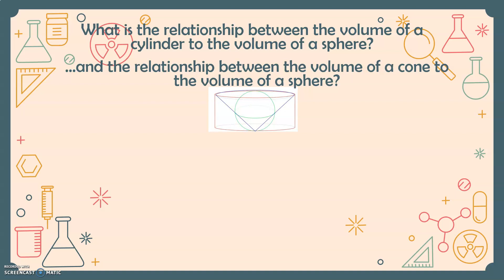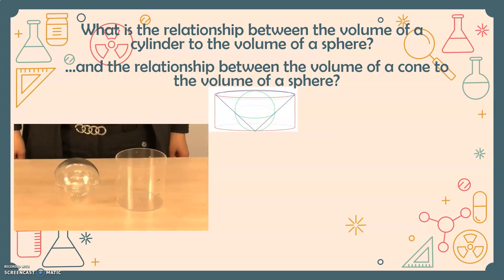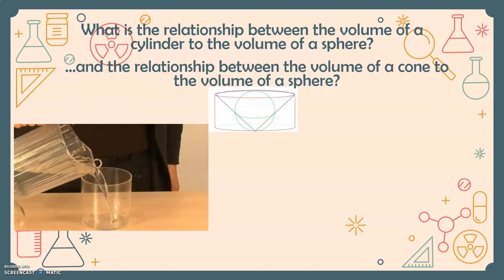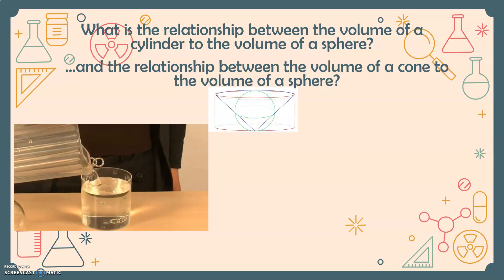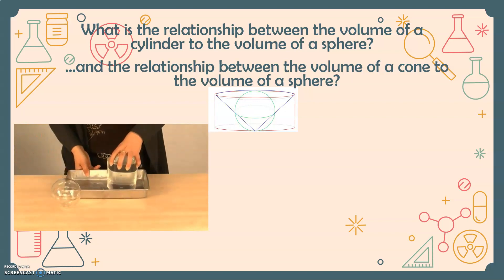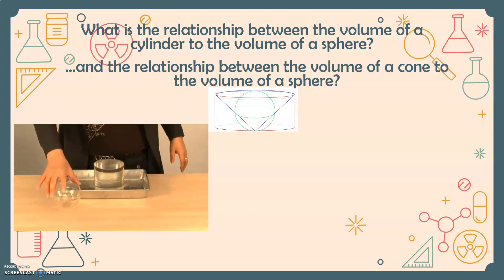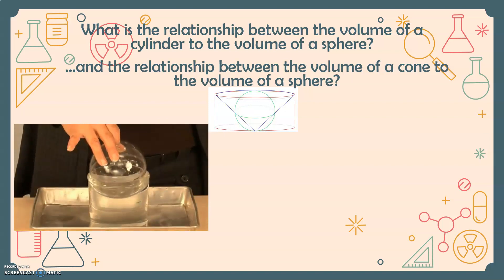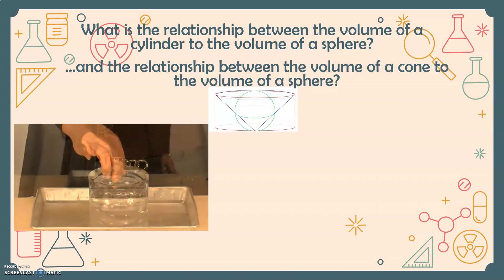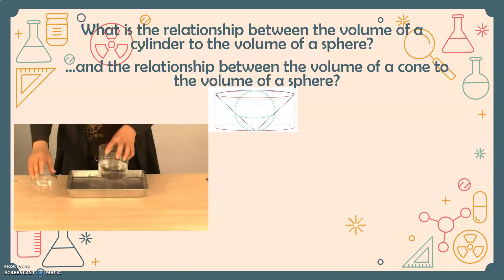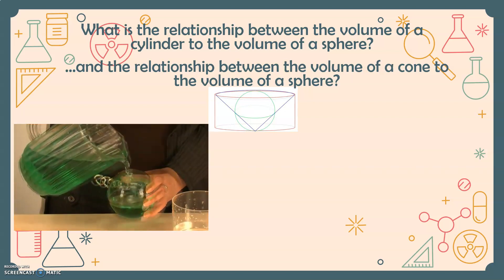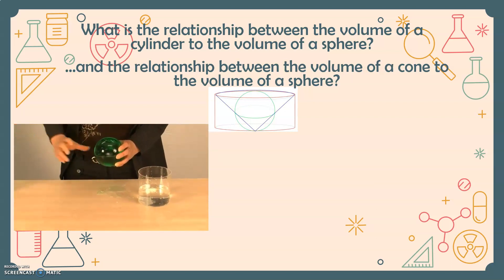Let's start with the volume of a cylinder and the volume of a sphere. In this video, we'll demonstrate the ratio of the volume of a cylinder to the volume of a sphere. We have a cylinder and a sphere with the same height and diameter. Fill the cylinder with water and push the ball into the cylinder. The volume of the water left in the cylinder is one-third of the original volume. That means the volume of the sphere is two-thirds of the volume of the cylinder.